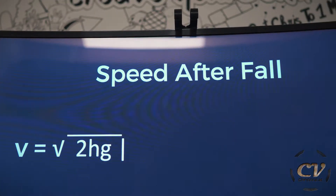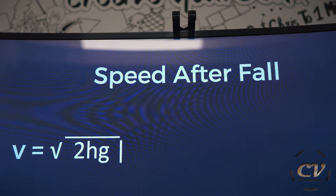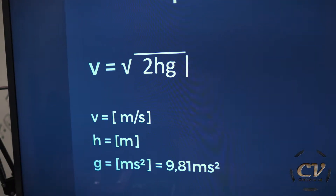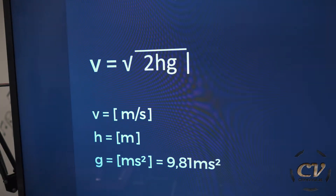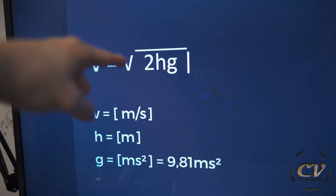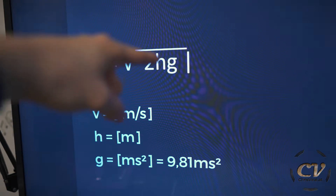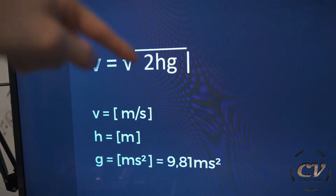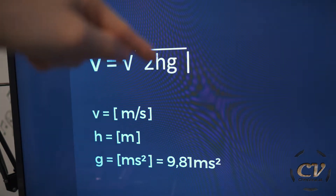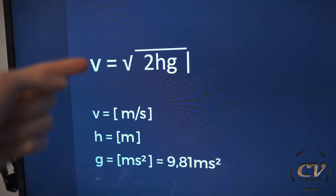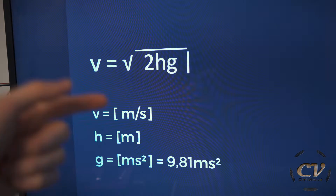Next, we want to know the speed after the fall. This is essential for later calculations. The speed v is the square root of 2 times h times g — 2 times the height times earth acceleration. And the unit for v is meters per second.